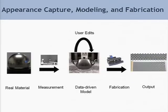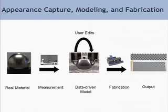The fourth example, and perhaps the one I'm probably the most interested in, is appearance capture, modeling, and fabrication. In this case, we are able to measure the appearance of any material, build a data-driven model for that material, and finally use printers and other output devices to manufacture surfaces with desired material properties.